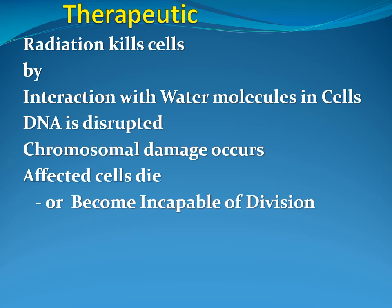Primarily there is interaction with the water molecules in the cells. The water molecules become ionized and cause killing of the cells — these are called indirect effects. The water molecules give rise to peroxides and reactive species, which can disrupt the DNA of dysplastic cells, causing chromosomal damage so that affected cells die or become incapable of division. Direct effects also occur, with radiation directly causing DNA and chromosomal damage.